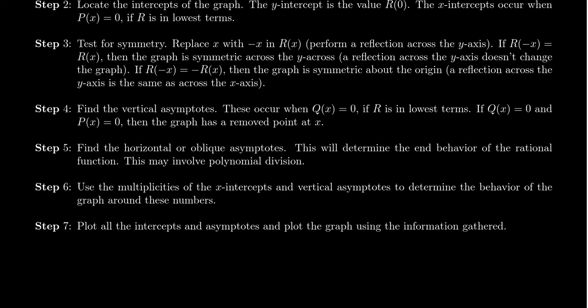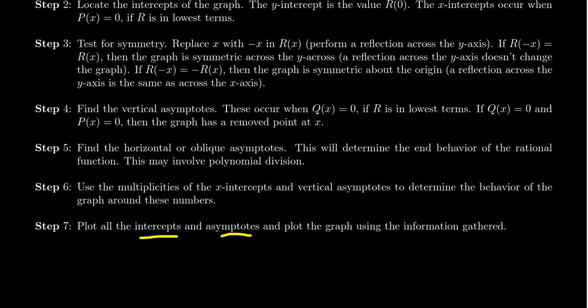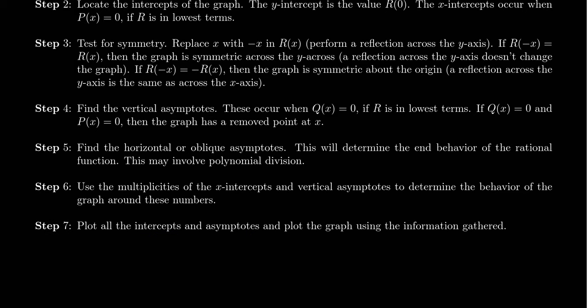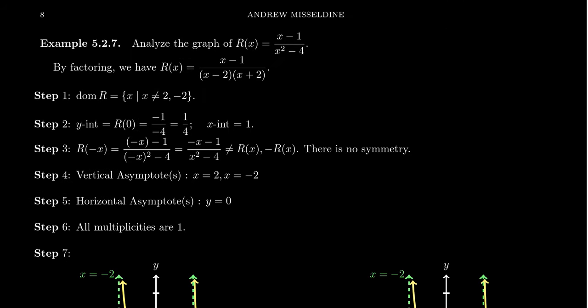Once you know the intercepts, the asymptotes, and their multiplicities, then you start plotting these things — putting the points on the graph: the intercepts, the asymptotes — and then connect the dots once you have that information. So let's look at an example: graphing the function r(x) = (x − 1) / (x² − 4).